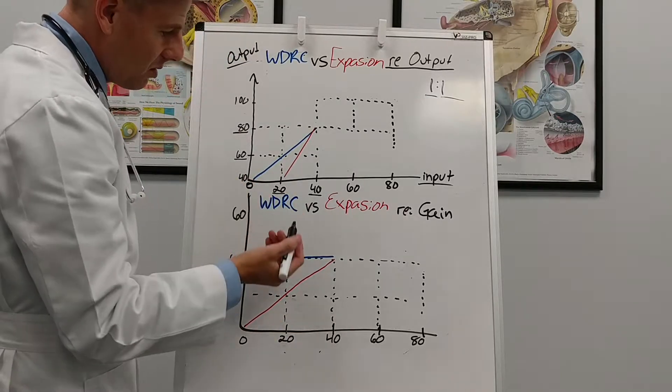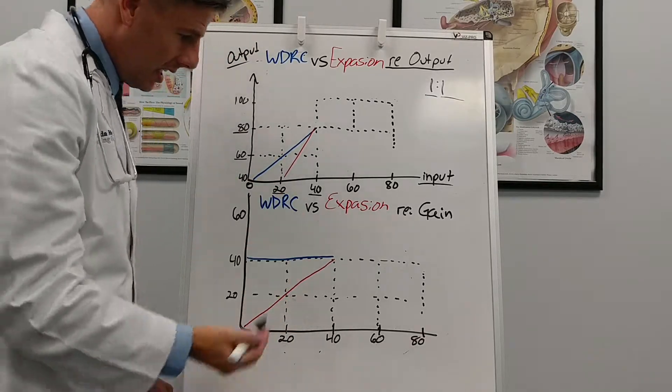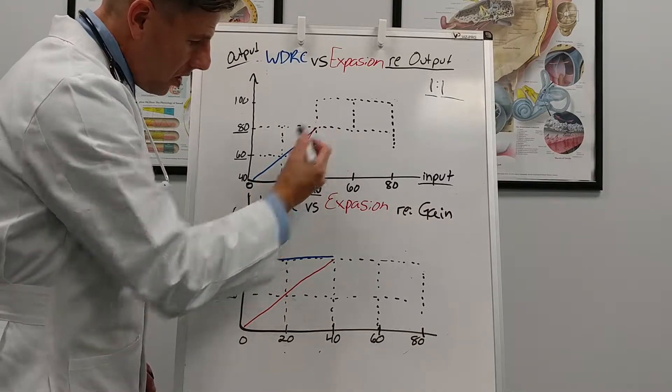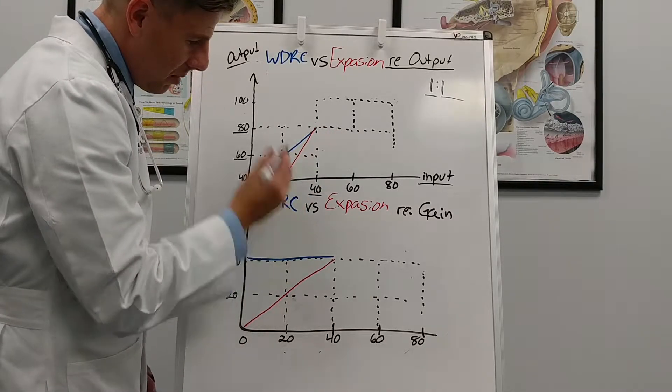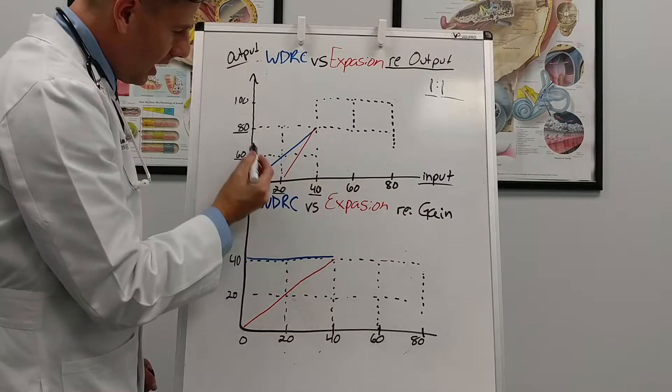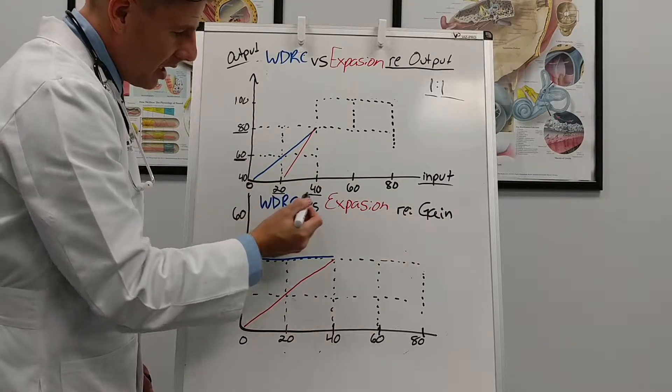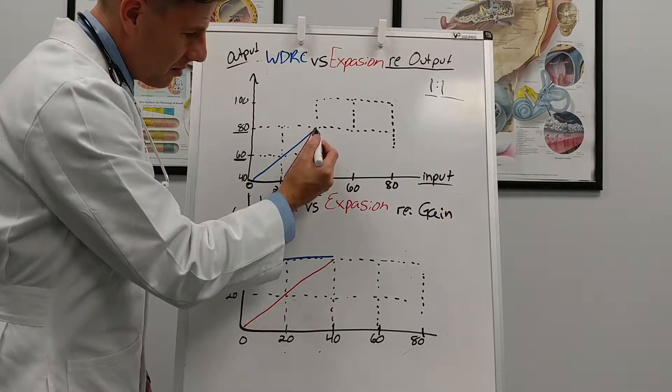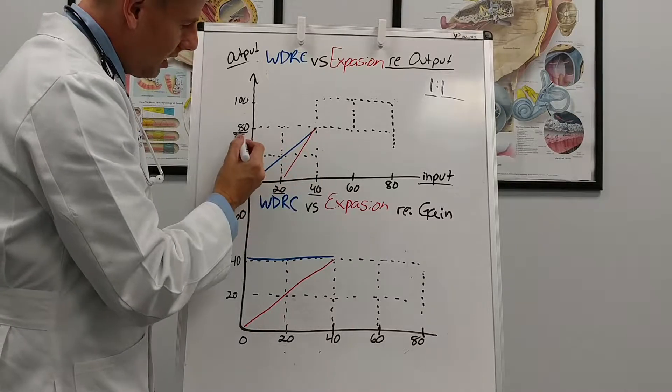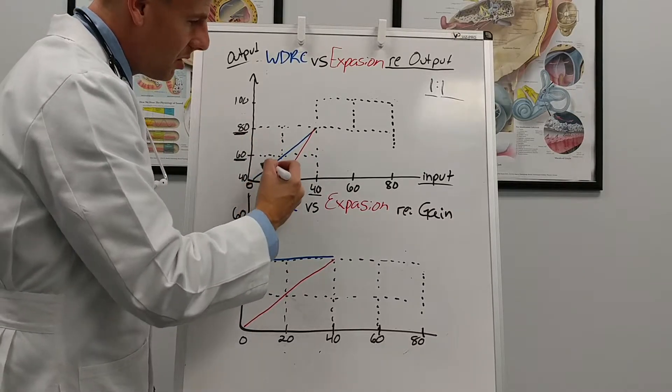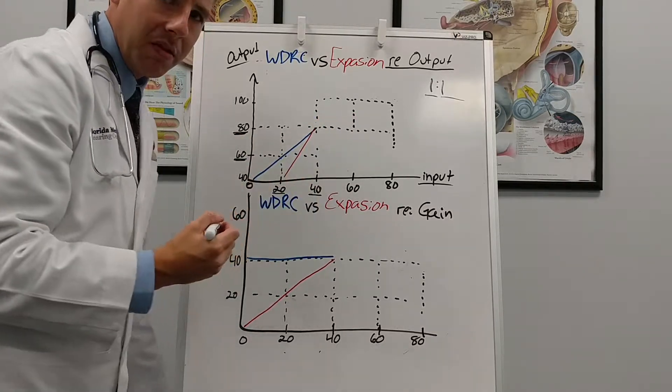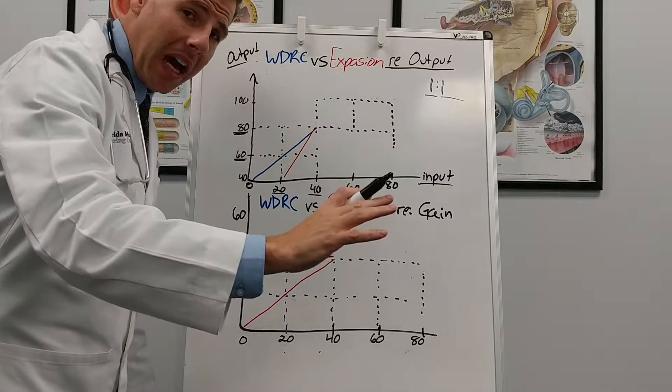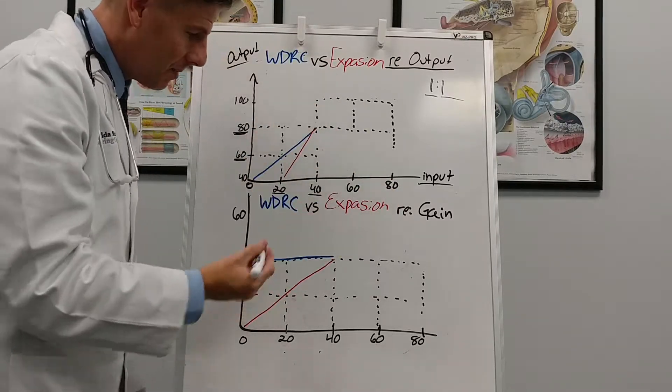So in a situation like this where I have a 40 decibel gain hearing aid, one to one means that when 20 comes in I'm going to add 40 to it and I'm going to be at 60. If 40 decibels of sound comes in I'm going to add 40 to it and I get 80 because I'm doing a linear one to one. Okay so the gain that I'm adding which is 40 I'm going to add it to everything that comes in.